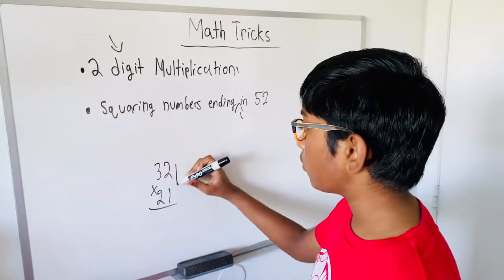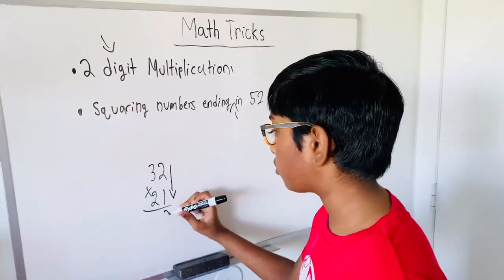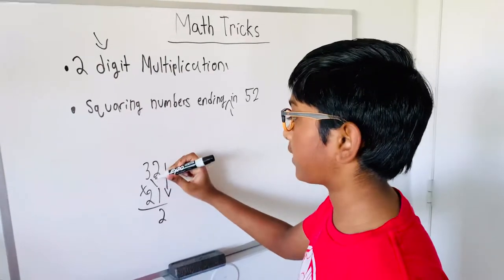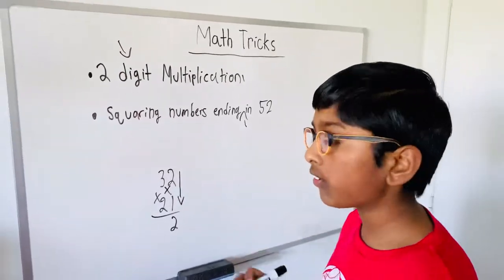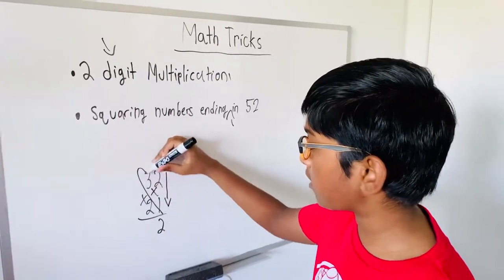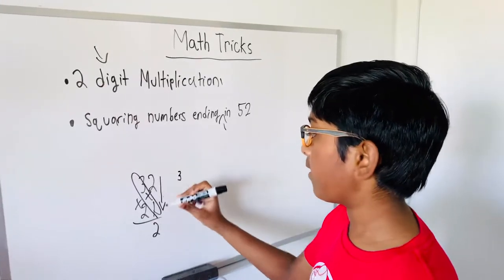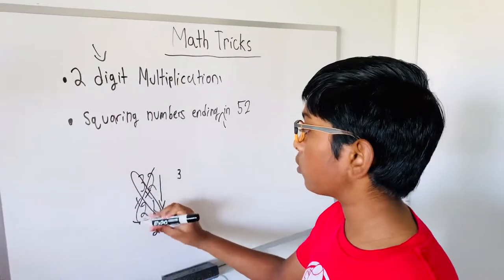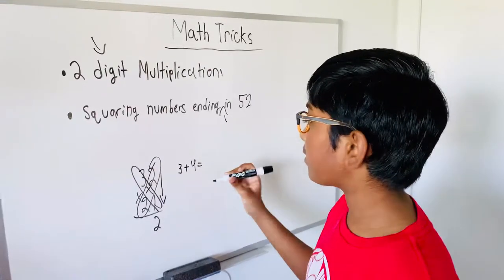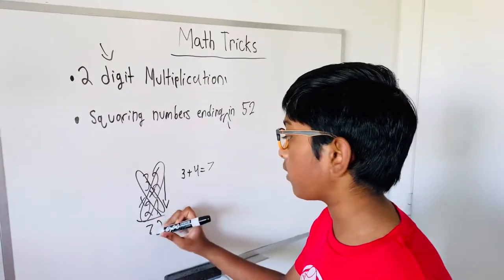First you need to do two times one. Two times one is two, so write that there. Now you need to do the X method, the cross method. Then you need to do three times one, which is three. So write the three there. Then you need to do two times two. Two times two is four. So we need to do three plus four. Four plus three is seven. So write seven there.